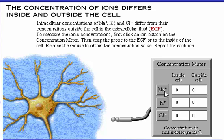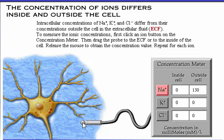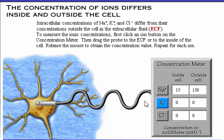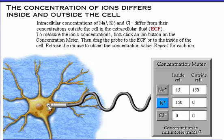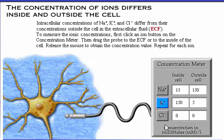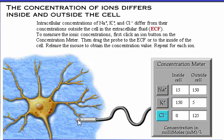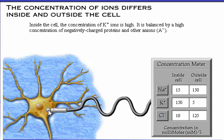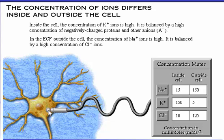Repeat for each ion. Inside the cell, the concentration of positive potassium ions is high, balanced by a high concentration of negatively charged proteins and other anions. In the extracellular fluid outside the cell, the concentration of positive sodium ions is high, balanced by a high concentration of negative chloride ions.